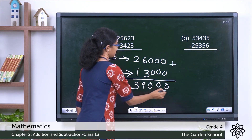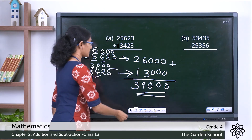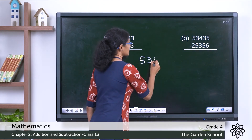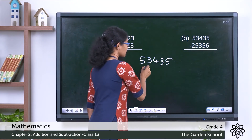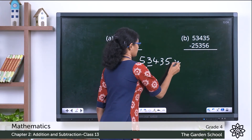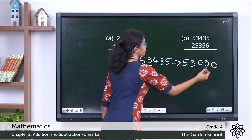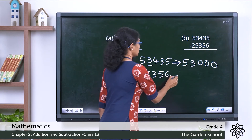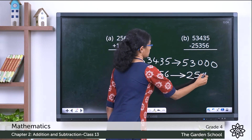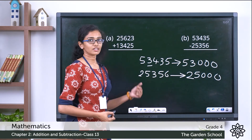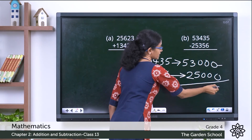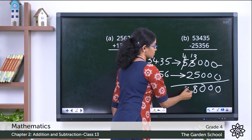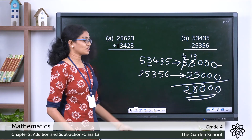Now we add the rounded addends: 26,000 plus 13,000 — six plus three is nine — so the estimated sum is 39,000. Question B is a subtraction problem: 53,435 minus 25,356. Rounding the minuend 53,435 — the rounding digit is three, digit to its right is four, so after rounding we get 53,000. Rounding the subtrahend 25,356 gives 25,000. Subtracting: 53,000 minus 25,000 — we borrow: thirteen minus five is eight, four minus two is two — giving an estimated difference of 28,000.